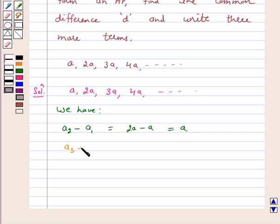A₃ minus A₂ equals 3A minus 2A, which is again equal to A. And A₄ minus A₃ equals 4A minus 3A, which is equal to A.